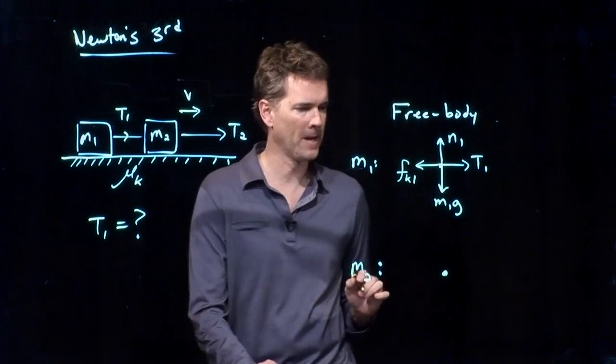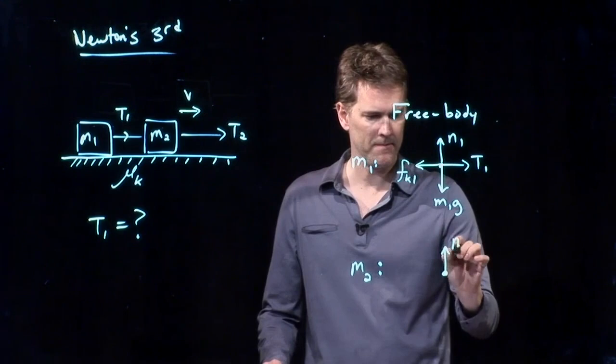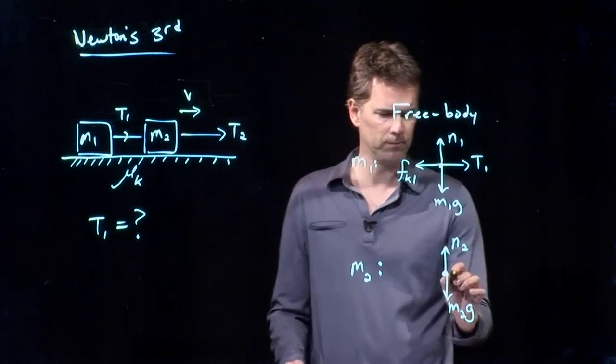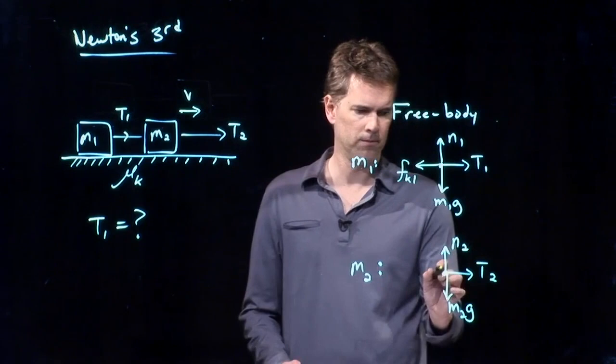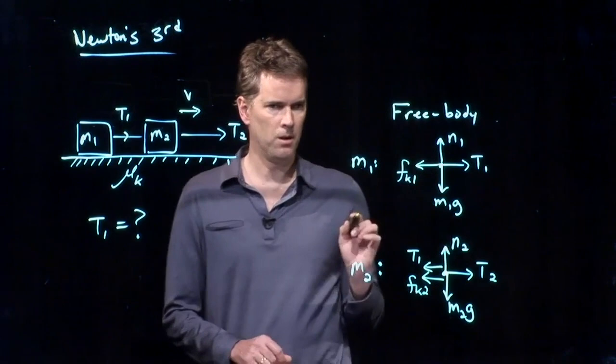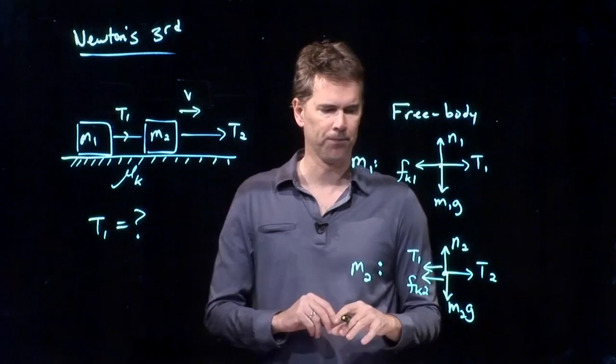M2. Brandon, what do you think I should draw for M2? Gravity going down. What else? Tension 2 to the right. Tension 1 going to the left. Kinetic friction going to the left, and we'll call that one FK2. Perfect. That's the free body diagram for mass 2.